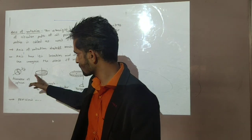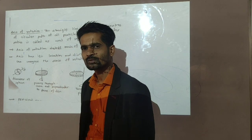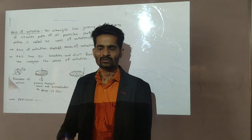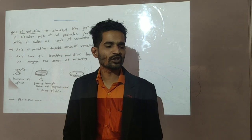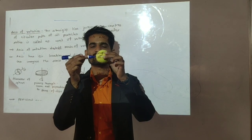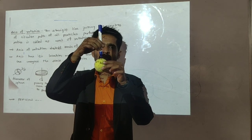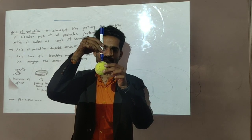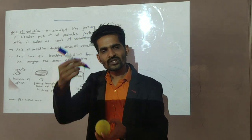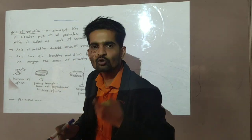Some examples are given. Suppose this is a sphere and this is the axis. A spherical ball is rotating about the diameter. Any axis passing through the center of the sphere is a diameter. When I say the sphere is rotating about the diameter, you should be able to imagine how the object is rotating.